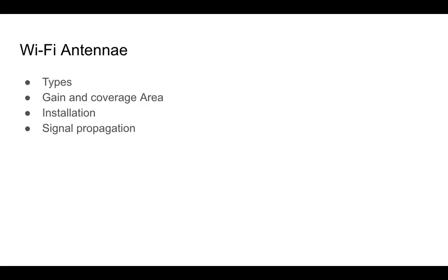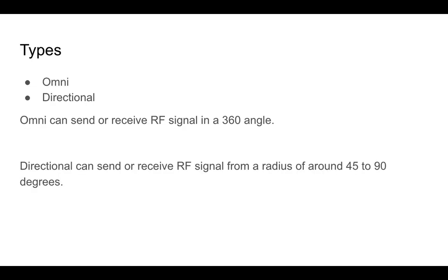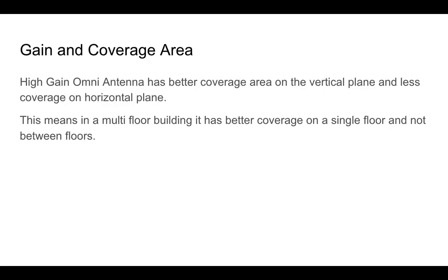Now let's talk about antennas — the different types, antenna gain, coverage area, installation, and signal propagation. There are two main types: the omnidirectional antenna and the directional antenna. An omnidirectional antenna can send and receive RF signals at a 360-degree angle, while a directional antenna covers a radius of about 45 to 90 degrees. Omni antennas can be high gain or low gain. A high-gain antenna has better coverage on the vertical plane and poorer coverage on the horizontal plane, meaning in a multi-floor building it provides much better coverage on the same floor compared to between floors.